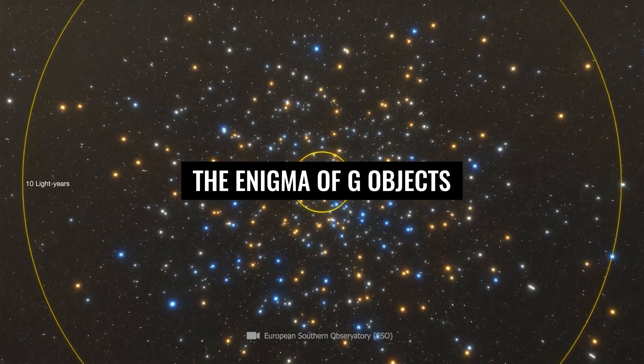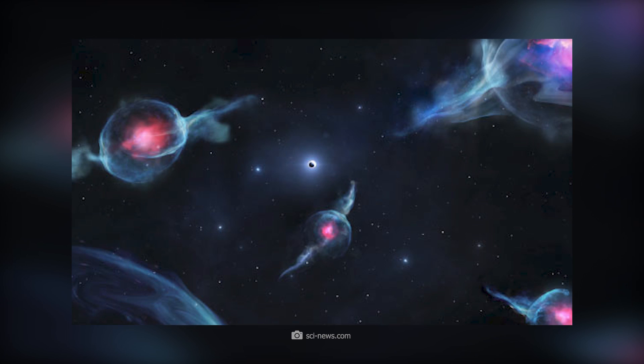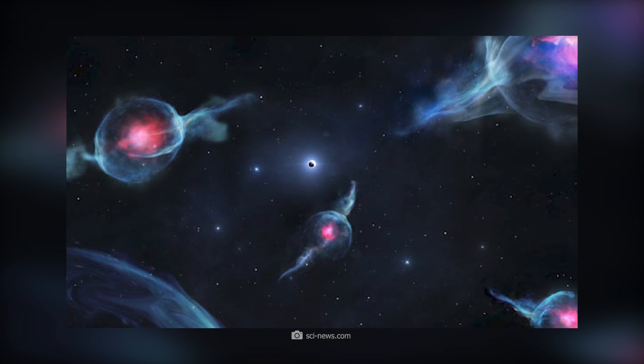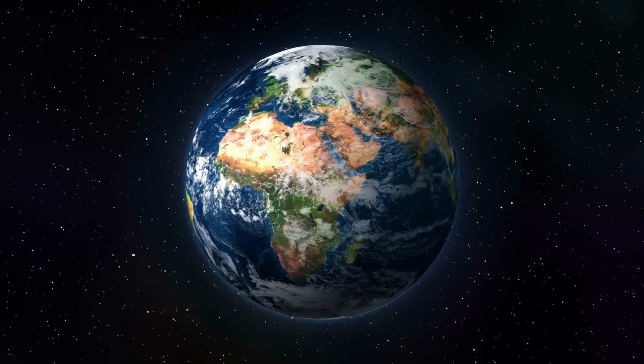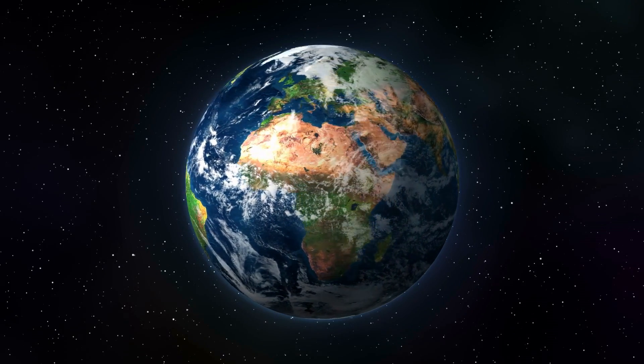The first object of this kind, the structure called G1, was tracked down by experts about 15 years ago. This was followed in 2011 by the discovery of G2, a gigantic gas cloud whose mass is three times greater than that of our home planet.